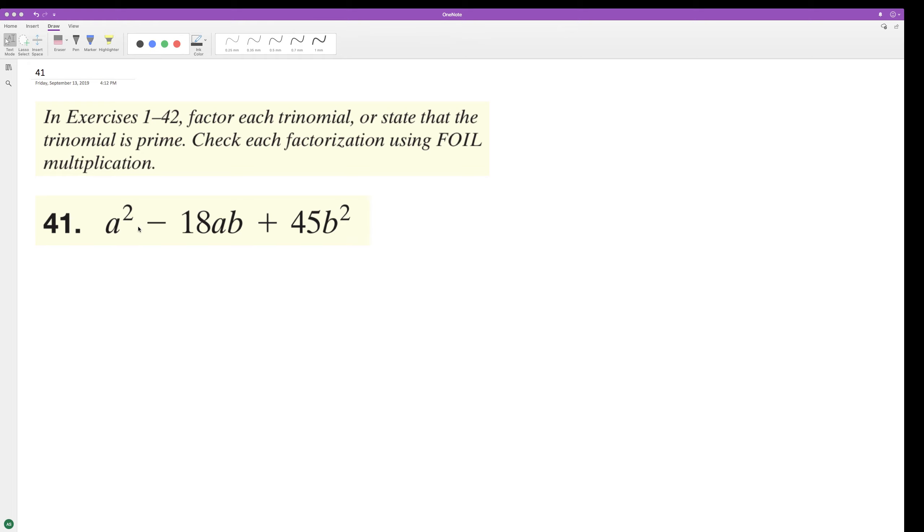For the following problem, we need our trinomial, so we need two numbers that when added together equal negative 18, but when multiplied equal 45.